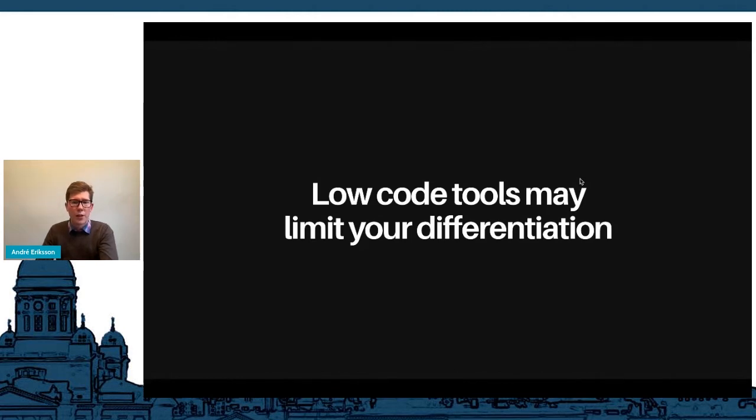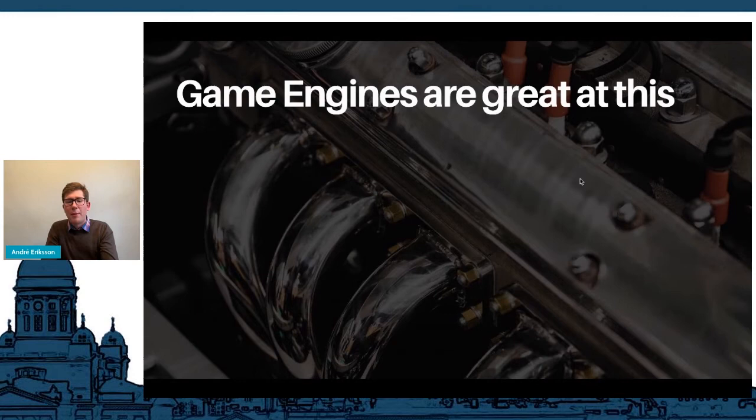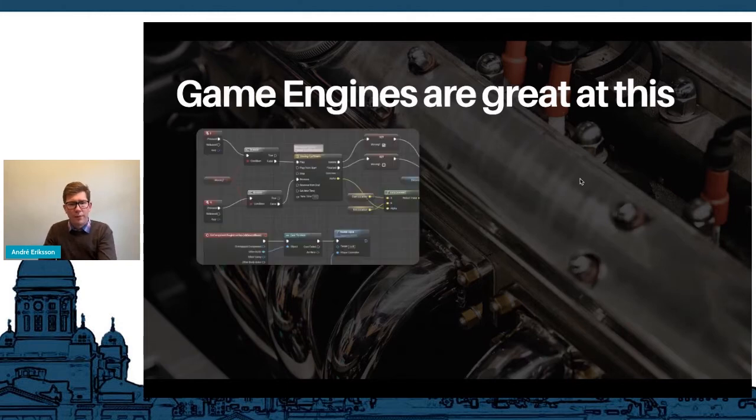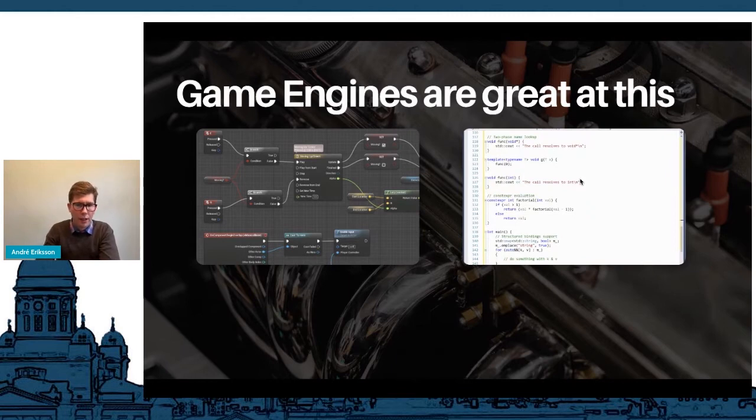Now this is not an unsolvable problem. In fact there's a great analogy to another industry, the game engine and game development industry, that is doing very well with a similar abstraction. Game engines help you build games faster and they do that at a very high abstraction level just like low code tools. But unlike low code, they enable you to build different parts of your game at different abstraction levels. For example, some parts of your game can be built by non-coders using a visual scripting language that looks like this, while other parts of the game are handwritten C++ at a very low abstraction level. You can kind of mix and match for different parts of your game.